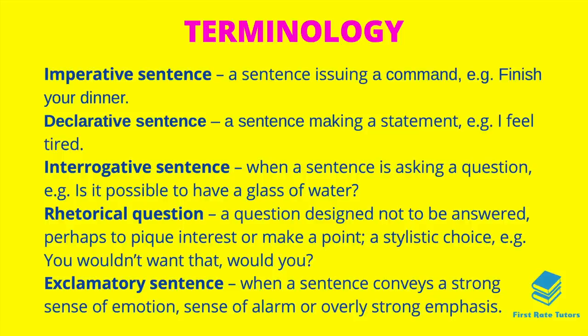When it comes to sentence types, an imperative sentence issues a command, for example 'finish your dinner'. A declarative sentence makes a statement, such as 'I feel tired'. An interrogative sentence asks a question, such as 'is it possible to have a glass of water'. A rhetorical question is a question designed not to be answered — it's used to pique interest or make a point, for example 'you wouldn't want that, would you?' An exclamatory sentence conveys a strong sense of emotion or alarm, such as 'watch out!', and usually ends with an exclamation mark.